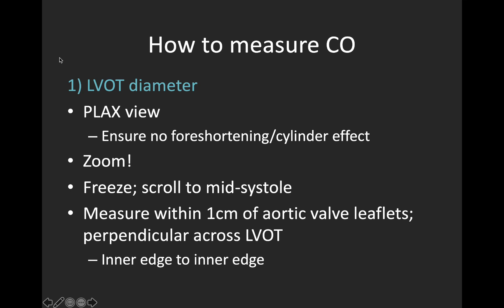So we need two pieces of information: the LVOT radius — or diameter divided by two — and the LVOT VTI. To get your LVOT radius, we'll measure the diameter and then halve it. We're going to use a parasternal long axis view, and it's really important to ensure there's no foreshortening or cylinder effect. You need to zoom, because this has to be a very precise measure — there are a lot of potential sources of error, so it's super important to do everything we can to get the most precise measurement possible.